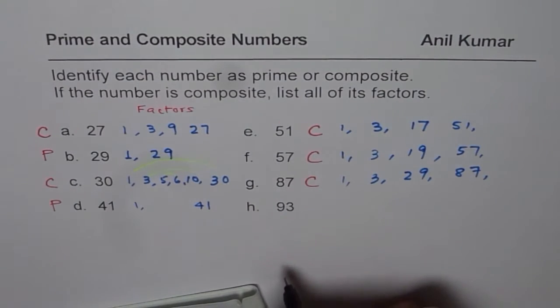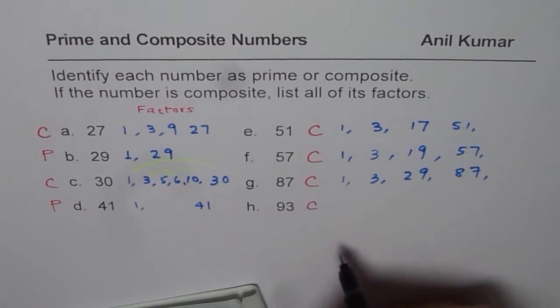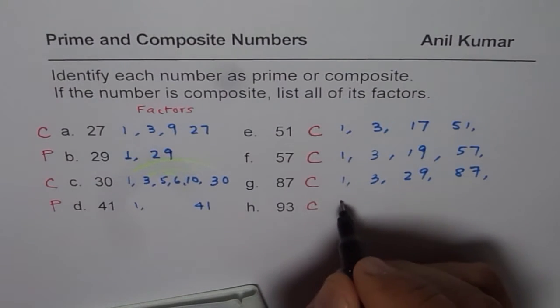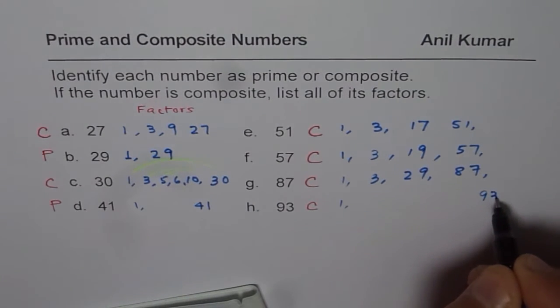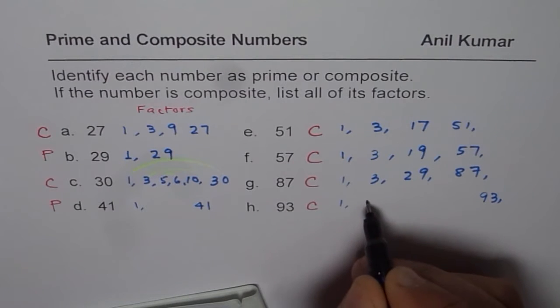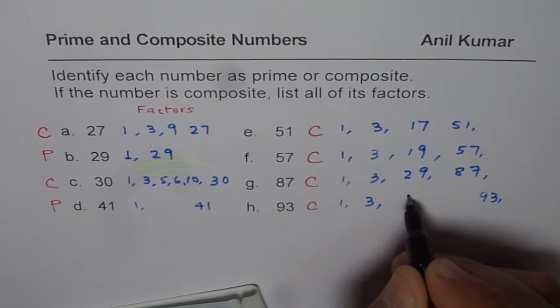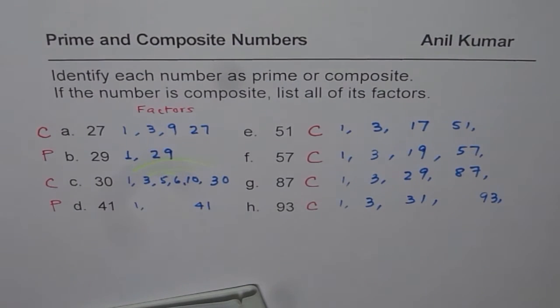9 and 3 is a composite number. And you can find all its factors. So 1 and 93, of course. And you can divide by 3. So if you divide by 3, you get 31. So these are the factors for 93. So it is also a composite number.